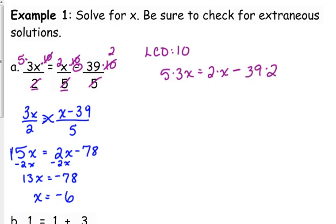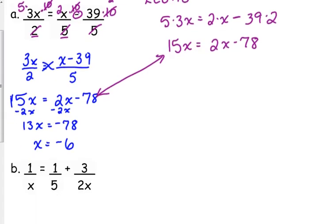Notice this is looking very similar to what we just did. 2x minus 78, and obviously that's the exact same thing right there. It's going to end up the same way. This was just a very simple example. Let's see what happens when we throw some more variables in there.